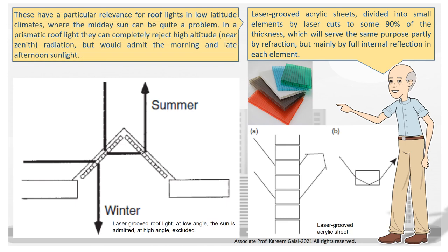These have a particular relevance for rooflights in low-latitude climates, where the midday sun can be quite a problem. In a prismatic rooflight they can completely reject high-altitude, near-zenith radiation, but would admit the morning and late afternoon sunlight.